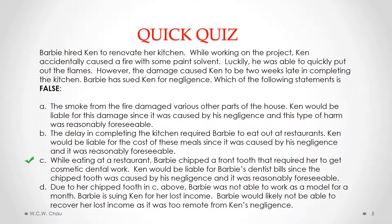B is also a true statement. It says the delay in completing the kitchen required Barbie to eat out at restaurants, and Ken would be liable for the cost of these meals since it was caused by his negligence and it was reasonably foreseeable. Ken's negligence in causing the fire led to the delay in completing the kitchen, which required Barbie to eat out at restaurants because she didn't have a kitchen at home. There is factual causation, and it is also reasonably foreseeable that causing a fire would delay the kitchen renovation and therefore cause Barbie to eat out.